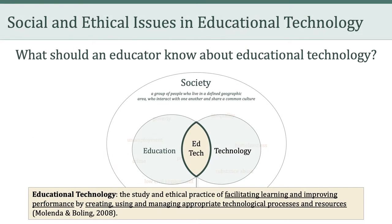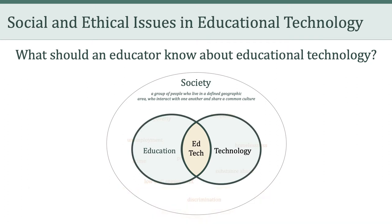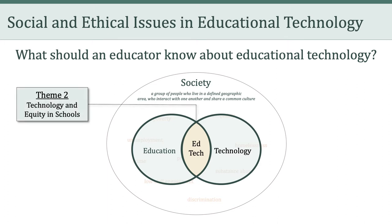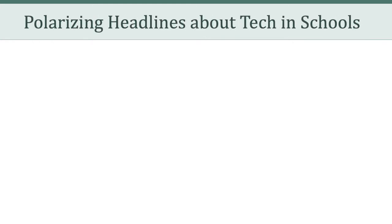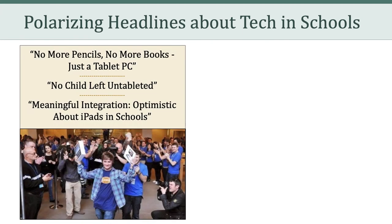Last week, we focused in on educational technology by looking at the definition of edtech. We also talked about how schools use technology, five areas of potential impact, as well as the various rationales for investing in educational technology. This week, we're going to broaden our perspective slightly to really look at the relationship between education and technology. This will be our introduction to theme number two: technology and equity in schools. To begin, I want to highlight a tension that exists when it comes to the relationship between education and technology, which you can see play out in the polarizing headlines about educational technology.